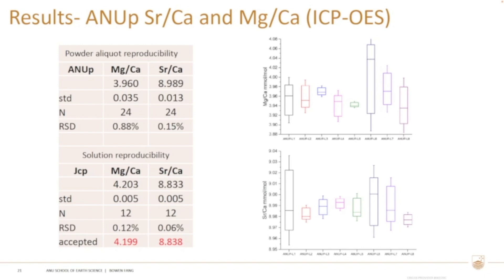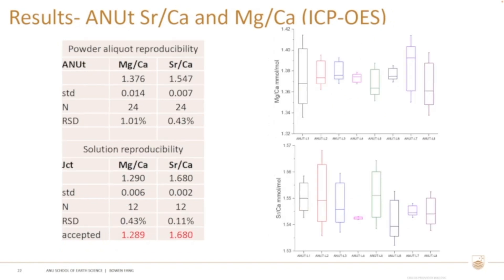For the ICP-OES element ratio results, we expect RSD under 1%, which would be very good. For strontium-calcium ratio, the standard deviation is under 0.02, which is ideal. Most ratios look good except magnesium-calcium, which is slightly higher in standard deviation, particularly from layer six which shows some variability. However it is still under 1% so we consider it still good enough for a standard. For the clam it's much better — much more homogeneous with less difference between layers.